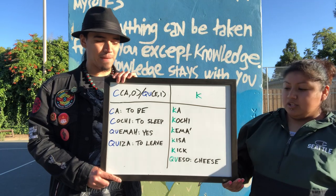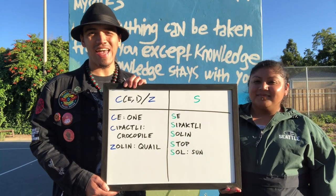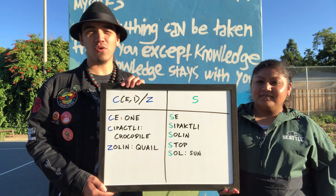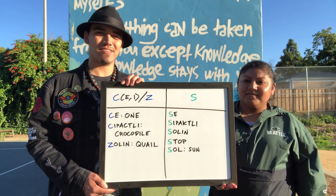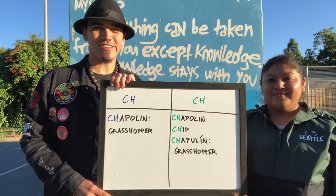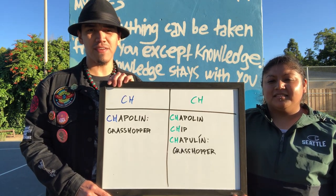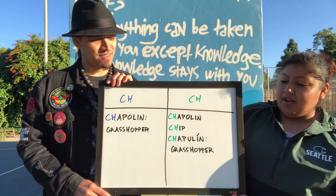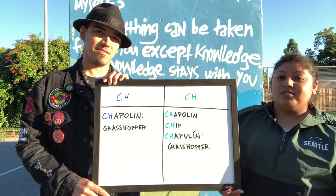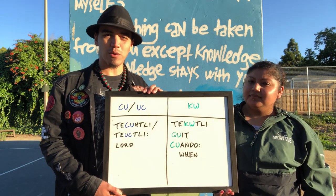The K sound is similar to the English word cake and the Spanish word queso, which means cheese. The S sound is represented by C before E and I, and Z in classical orthography, pronounced S as in ce, meaning one; cipactli, meaning crocodile; and zolin, meaning quail. In modern orthography, it's represented by an S, similar to the S in the English word stop and the Spanish word sol. The CH sound is represented by CH in both classical and modern orthography, pronounced CH as in chapolín, which means grasshopper — similar to the CH in the English word chip and the Spanish word chapolín, which also comes from the Nahuatl chapolín. The CU sound is represented by CU or UC in classical orthography, pronounced QU as in tecutli, which means lord.